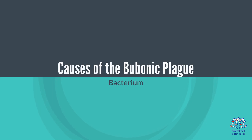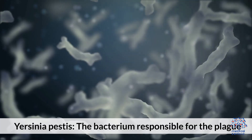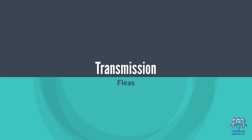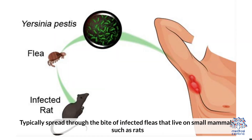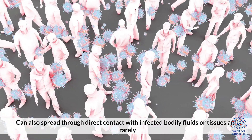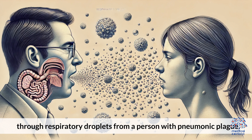Causes of the Bubonic Plague. The bacterium responsible is Yersinia pestis. Transmission typically occurs through the bite of infected fleas that live on small mammals, such as rats. It can also spread through direct contact with infected bodily fluids or tissues, and rarely through respiratory droplets from a person with pneumonic plague.